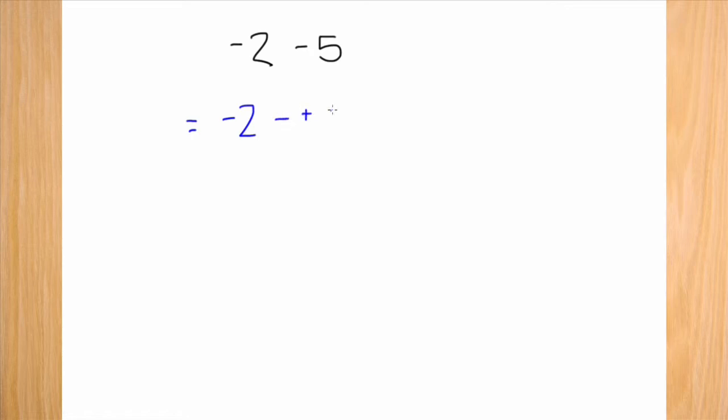We can do this because subtraction is equivalent to adding the opposite. Now you will add. If you simplified this expression correctly, you should have gotten negative seven. The benefits of this method are that it is very fast, but it can be confusing at times.